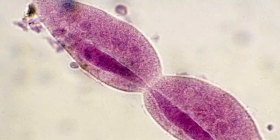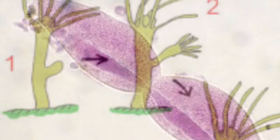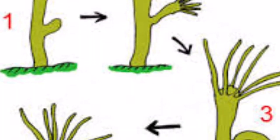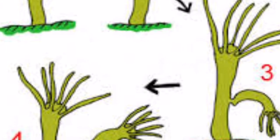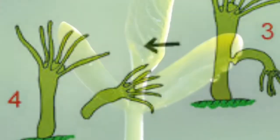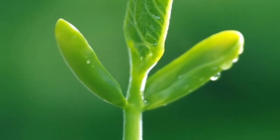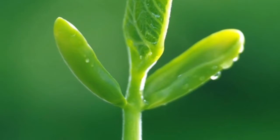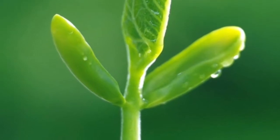Binary fission only occurs in prokaryotic cells such as bacteria. In budding, the offspring grows on the parent until fully sized, then it falls off and the process starts all over again. This process mostly occurs in eukaryotic cells.